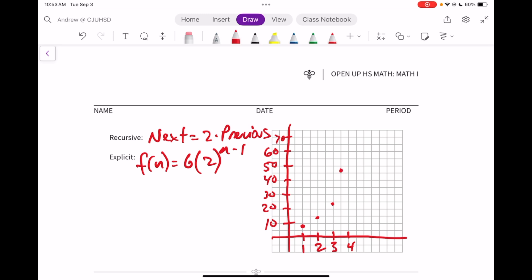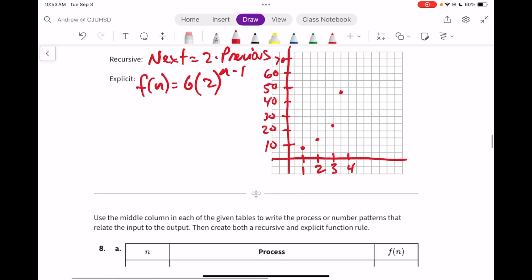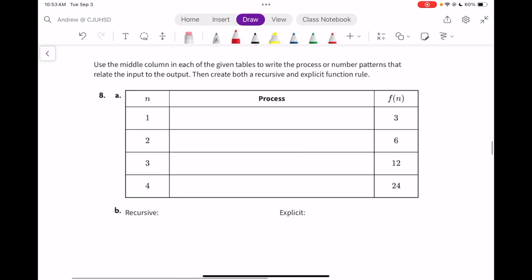Use the middle column to write the process or number patterns that relate the input to the output. Then create both recursive and explicit function rule.